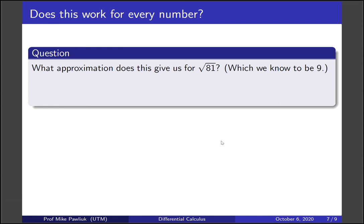What approximation does this give us for the square root of 81? Which we already know to be 9 but let's just see what does this approximation tell us? So instead this time we're going backwards 19 units and we're going to have to subtract off 19 slopes and if you do this you'll end up with 9.05.